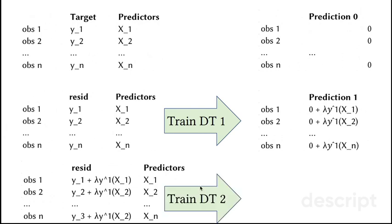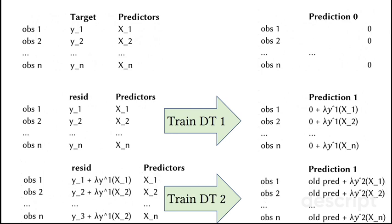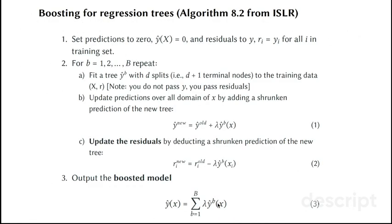Now, we again train the decision tree. Now, it's the decision tree number 2, which tries to attack the residuals by predicting the residuals from the set of predictors. In this way, we can get the new predictions, which is the old prediction, this one, plus the shrunk prediction from the second decision tree. And so on. We can grow many decision trees, not just two. In general, the algorithm looks like this.